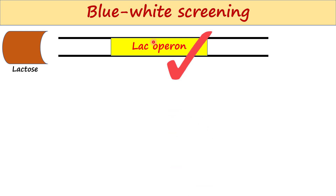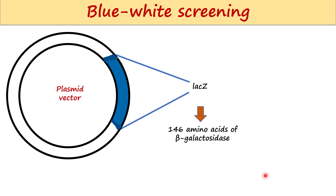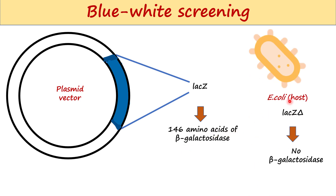When the lac operon is on, it produces beta-galactosidase enzyme. Most plasmid vectors carry a short segment of the lac Z gene, which is part of the lac operon, and it contains coding information for the first 146 amino acids of beta-galactosidase.